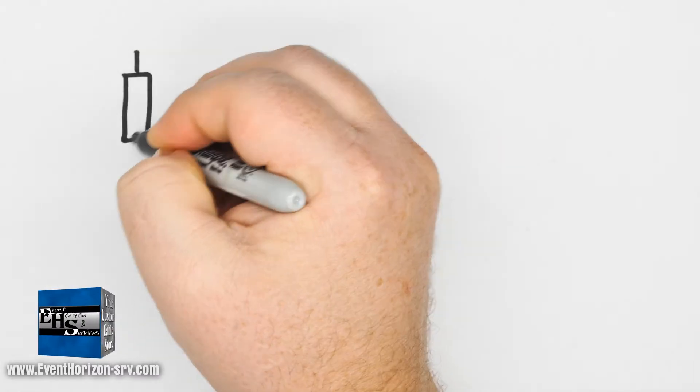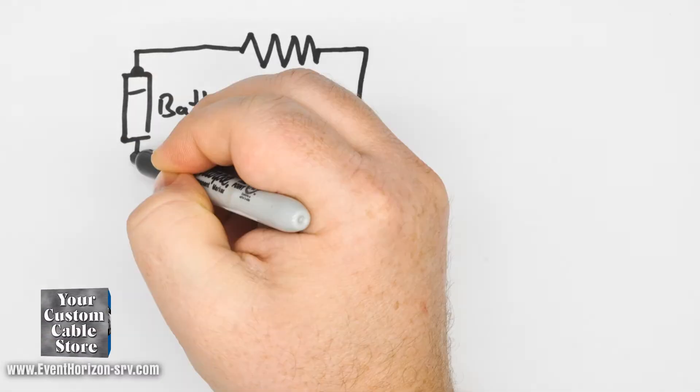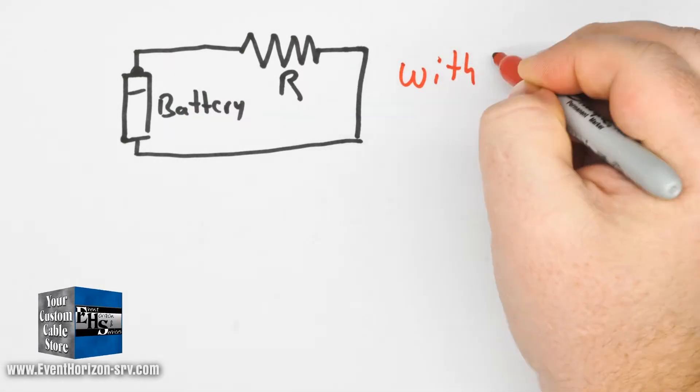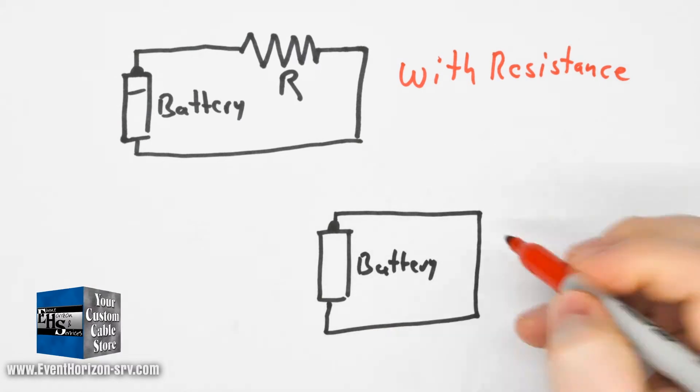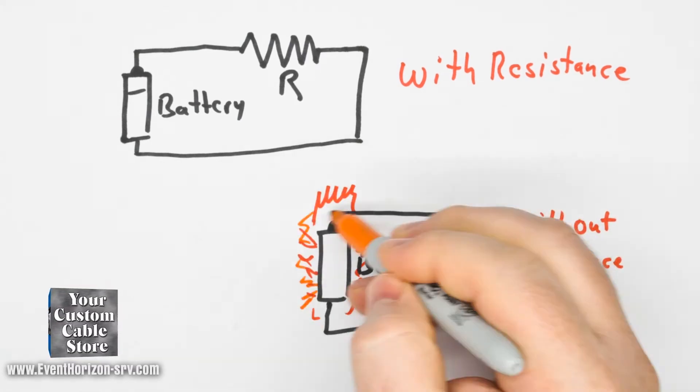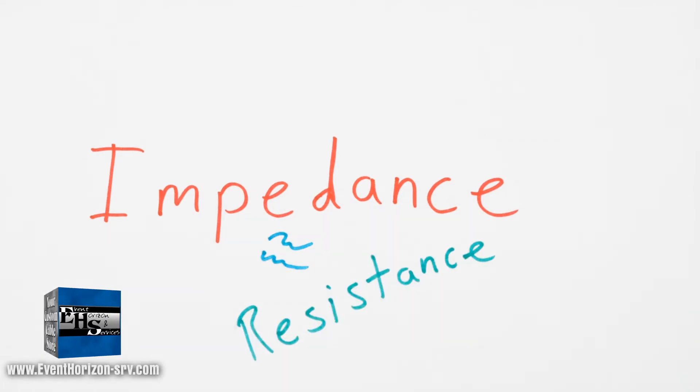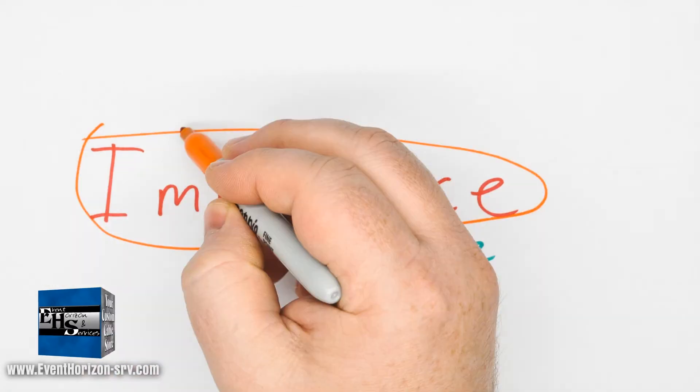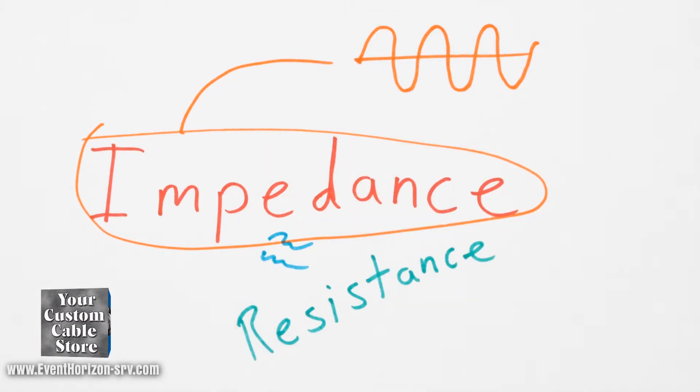In electrical terms, it's the difficulty of electrons to flow through an object or a circuit. Anything that is not a perfect conductor has resistance. Without resistance, everything would be a short circuit and electricity wouldn't work as we know it. So impedance is basically frequency-dependent resistance, or resistance in an alternating current circuit like audio.